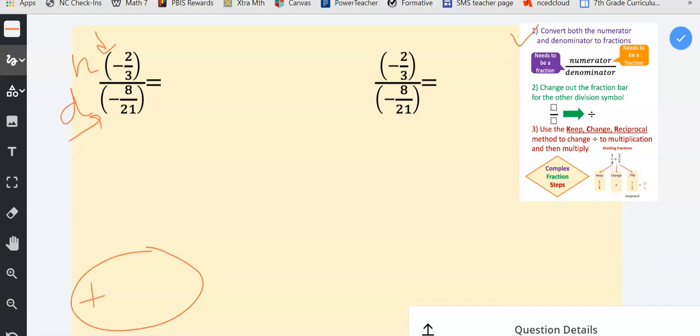Step two says change out the fraction bar for the other division symbol. So we're going to take this fraction bar out and replace it with the division symbol, and we want to write the numerator first and the denominator second. So the numerator is negative two-thirds. The denominator is negative eight twenty-firsts.